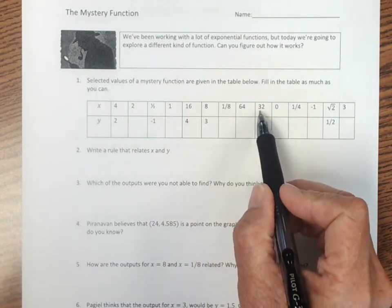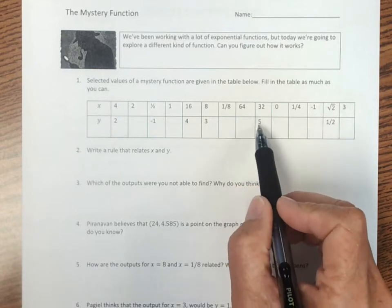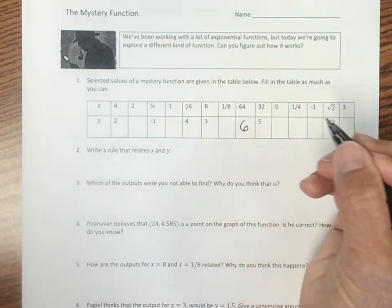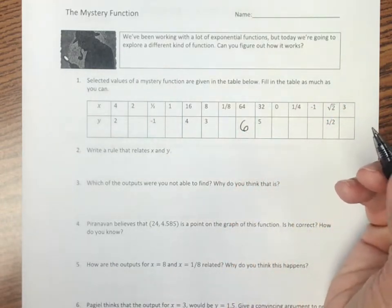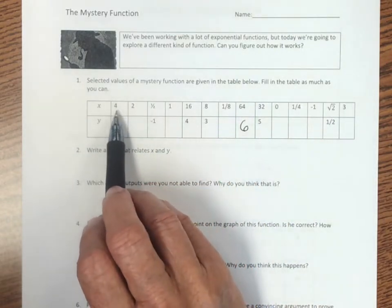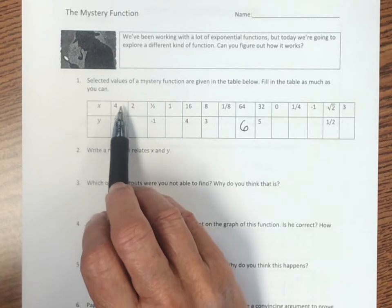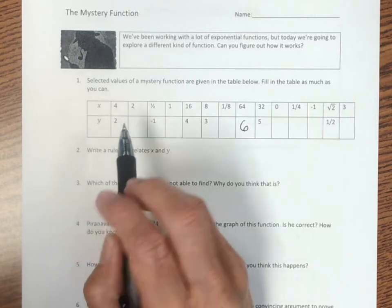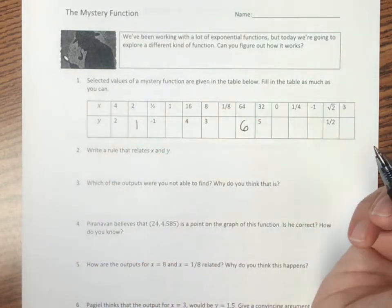So I think if I go from 32 to 64, that's doubled. This should go up by 1, so that should be a 6. That looks okay. And then maybe going the opposite direction here, if I went from 2 to 4, that's doubled. So this number should be 1 less. That should be a 1.